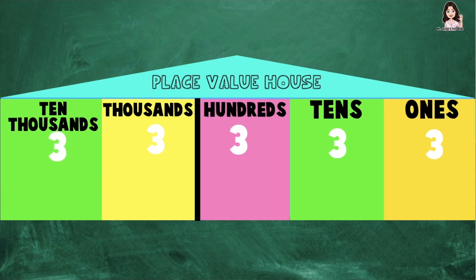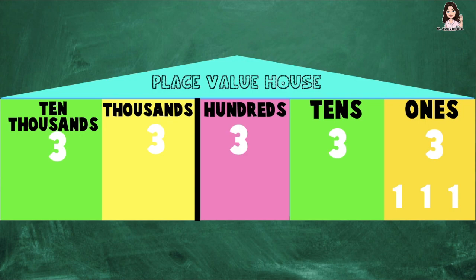As you can see, all the digits on each place value are the same. The question is: will their value also be the same? So let's find out. At the ones place, we have 3 ones. So let's count the value of digit 3 at the ones place: 1, 2, 3. So the value of digit 3 at the ones place is 3.